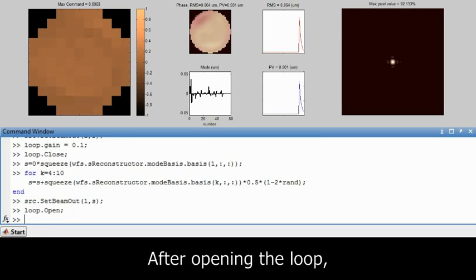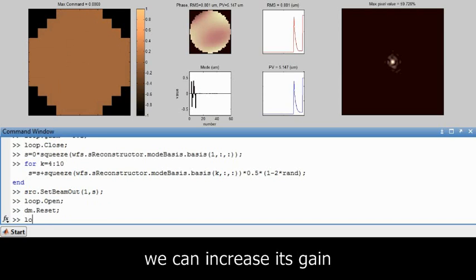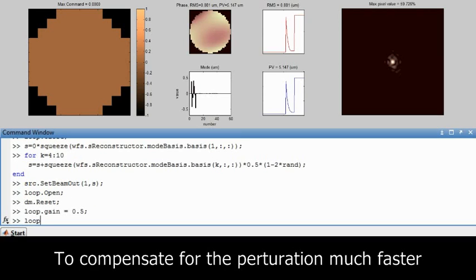To change the properties of the loop, we first open the loop and reset the mirror. Now we can increase the gain of the loop in order to increase the correction speed. Once again we close the loop.